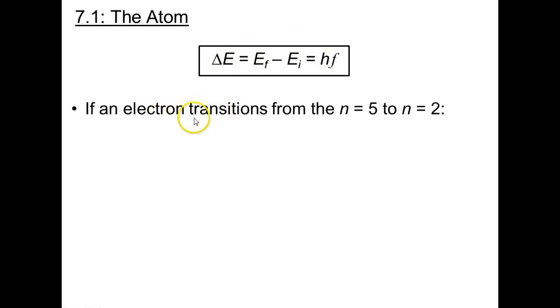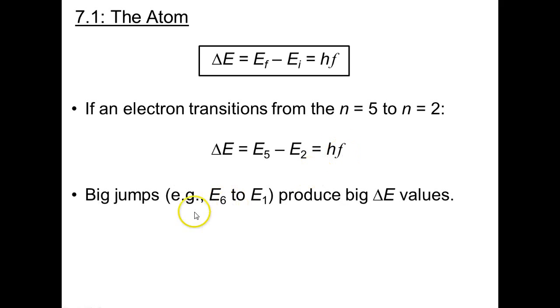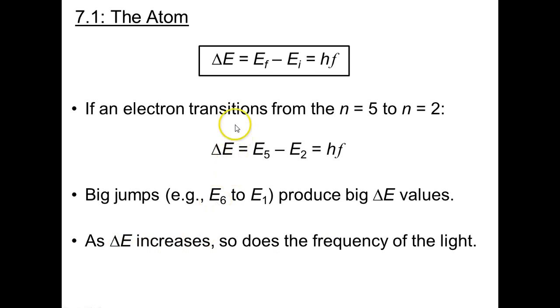So this equation, it says that if we transition from n equal to 5 to n equal to 2, well, you just plug in E5 minus E2, and that's equal to h times the frequency of emitted light. So if we have big jumps, we'll have bigger delta E values. Because the higher n value you get, the higher energy level, the higher the energy. E6 is really, really big. E1 is the smallest energy level. So from E6 to E1 is a huge delta E value. As this delta E increases though, so does the frequency of light emitted. And blue or purple light is the highest energy light, which means it's also the highest delta E value. So if you see, for example, a flame, and it's a blue flame, then that blue light indicates that there are big energy jumps occurring.